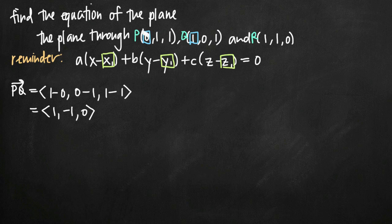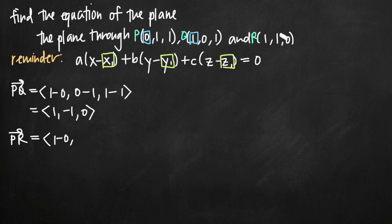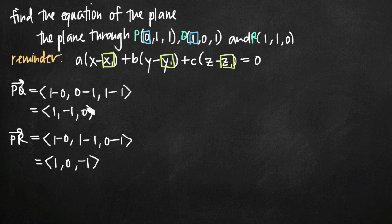Now we need a second vector: PR. Since we're going from P to R, we start with the component values in R and subtract those from P. For x: 1 minus 0; for y: 1 minus 1; for z: 0 minus 1. Simplifying, vector PR equals (1, 0, -1). Now we have two vectors which define our plane, and we can take their cross product to get the normal vector.